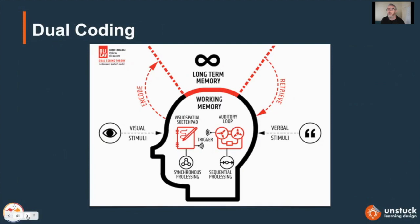Finally, dual coding. This is a really useful thing to understand. Basically, dual coding means that your brain can take in visual stimuli and verbal stimuli at the same time because they are processed in different ways. Any visual stimuli goes to the visual-spatial sketchpad — one part of the brain where information is encoded synchronously, meaning your brain encodes the whole picture together.